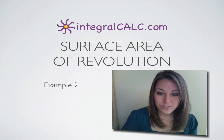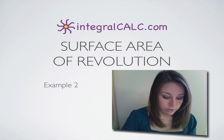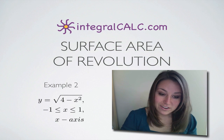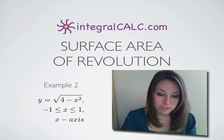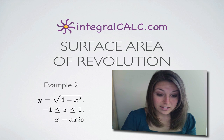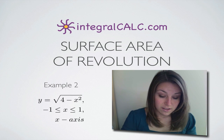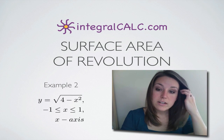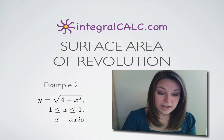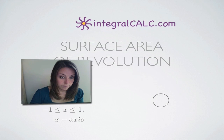Today, we're going to be doing another surface area of revolution problem. The function we're given is y equals the square root of four minus x squared, and they've asked us to rotate that function around the x-axis and find the surface area of that rotation between x equals negative one and x equals one.